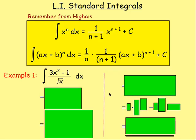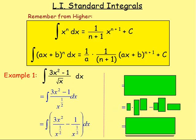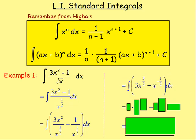Let's try some examples with standard integrals. Example 1: integrate 3x squared take away 1 over the square root of x. First, the square root of x you write as x to the power of 1 half. So you'd have the integral of 3x squared take away 1 over x to the power of 1 half. Then you either bring x to the power of 1 half to the top line as x to the negative 1 half, or split it into two fractions and simplify. Either way, you get 3x to the power of 3 over 2, take away x to the power of negative 1 half.